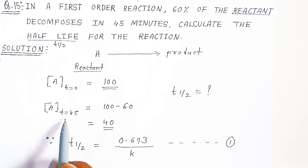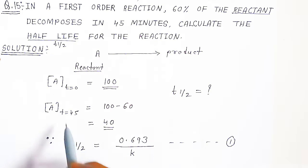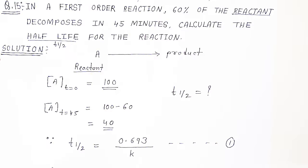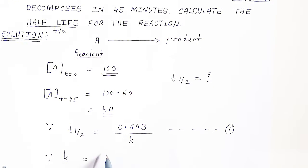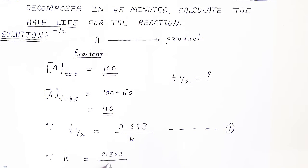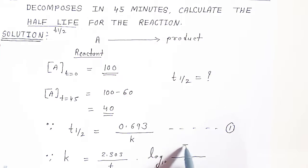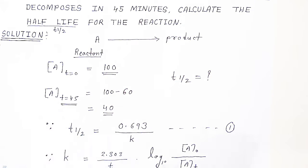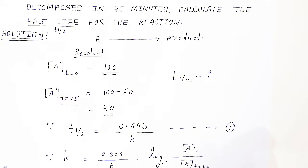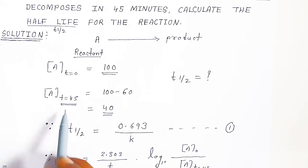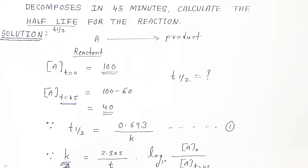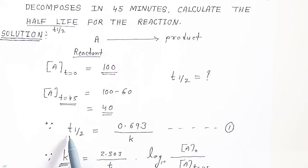Now you know the initial concentration and the concentration at time T = 45 minutes, which is 40. With this data we have to calculate the rate constant K. The rate constant is: K = 2.303 divided by time T, multiplied by log base 10 of the ratio of initial concentration to concentration at time T. Once you get K, put it in equation 1 to find T half.